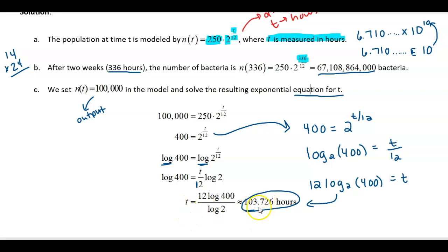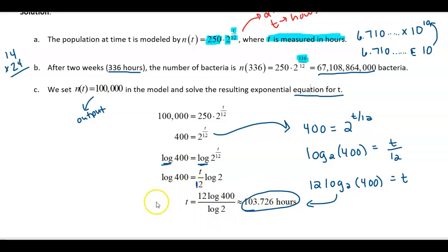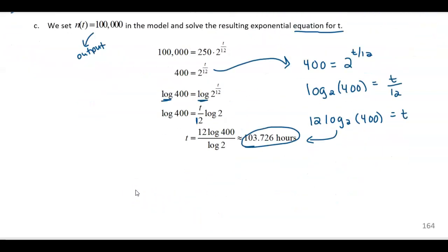After about 103 to 104 hours, you will have 100,000 bacteria — that's how long it takes to reach that amount. The logarithm algebra will find that number for you; you just have to use what you know about logarithms.